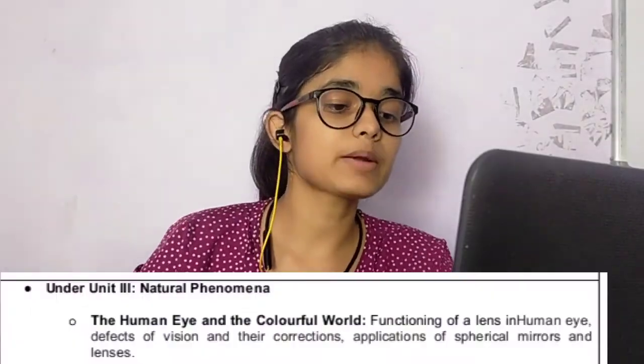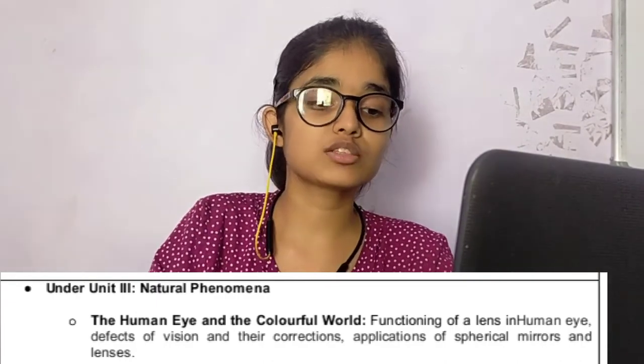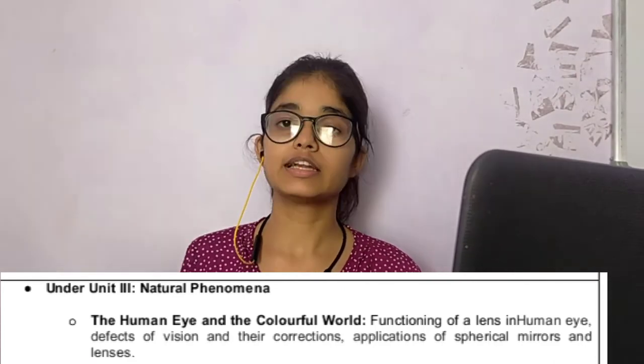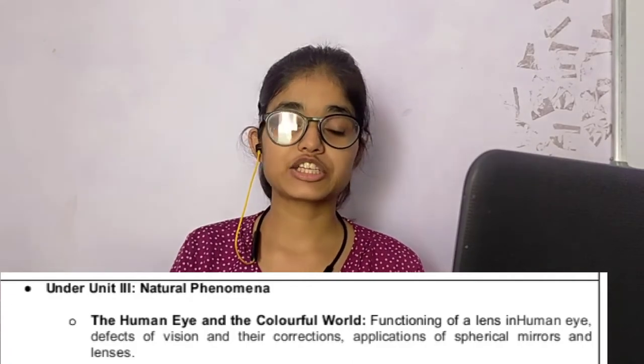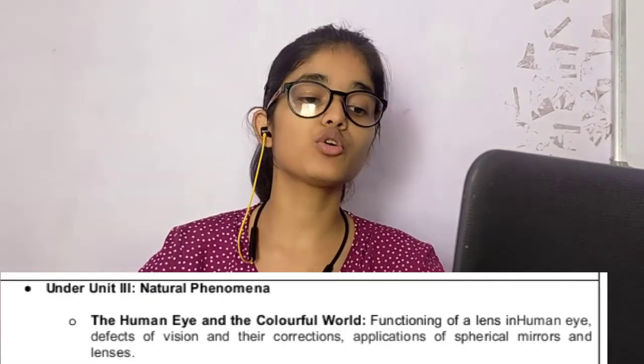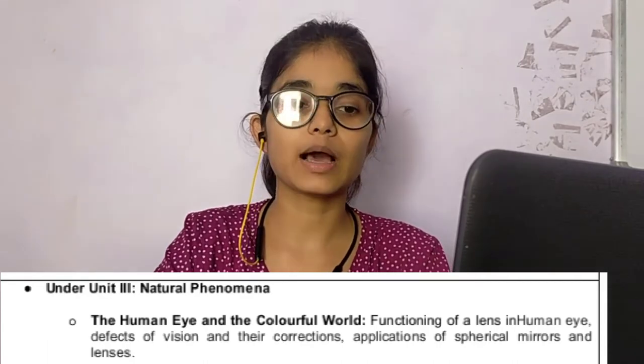Let's go to Unit number 3 - Natural Phenomena. There are two chapters: chapter 10 and 11. Chapter 10 - Light: Reflection and Refraction - you have to study all of this. Chapter 11 - The Human Eye and the Colorful World - this has been deleted completely, including Functioning of the Lens in the Human Eye, Defects of Vision and Their Corrections, and topics on Spherical Mirrors and Lenses.